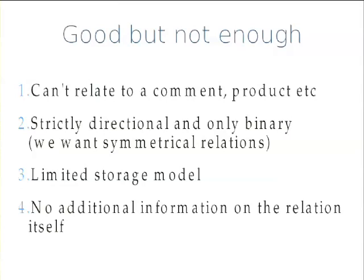Also, it's strictly directional and binary, so you can only relate from one thing to another. Even though you can have multiple field values, it's still always from A to B. You can never go back, and you can never have a symmetric relationship between several different entities. The storage model is also somewhat limited. It's also complicated to add additional information to the relationship — if you want to emulate something like Facebook friends, you would need an extra text field to describe the type of relationship, and all the metadata would have to go on either source or target, which doesn't really make sense and would clutter the interface.